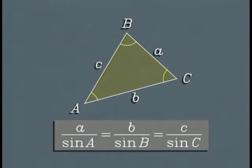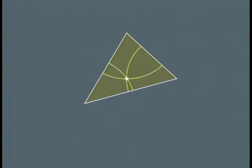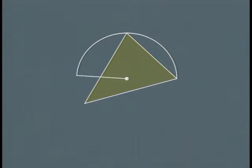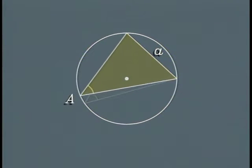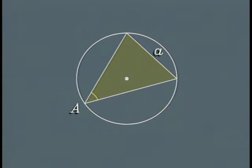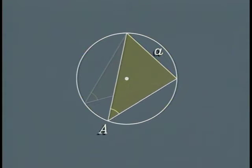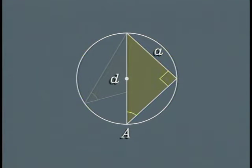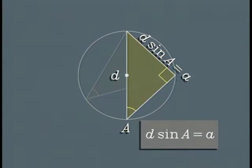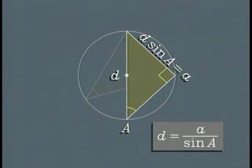This property of right triangles inscribed in a semicircle leads to a remarkably simple proof of the law of sines. Start with a triangle and find the point equidistant from its vertices. Use this as center and draw a circle through the vertices. Let capital A denote the angle opposite the chord of length small a. The measure of the angle doesn't change if it cuts off the same chord while its vertex moves along the circle. Now move the vertex so that one side passes through the center of the circle.